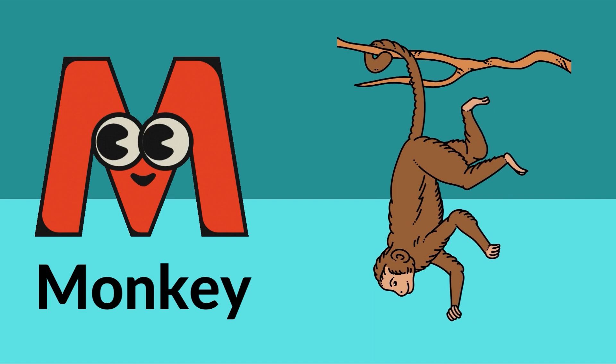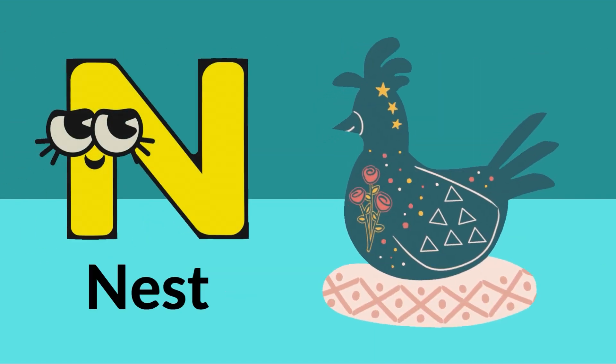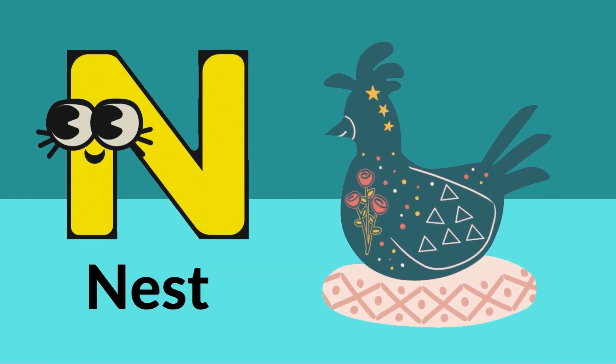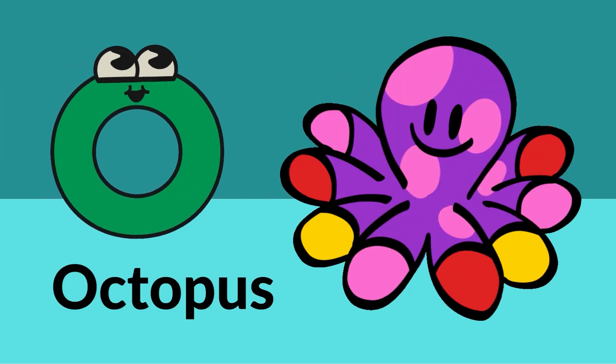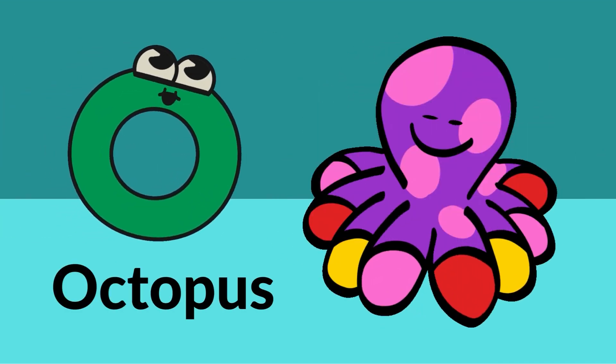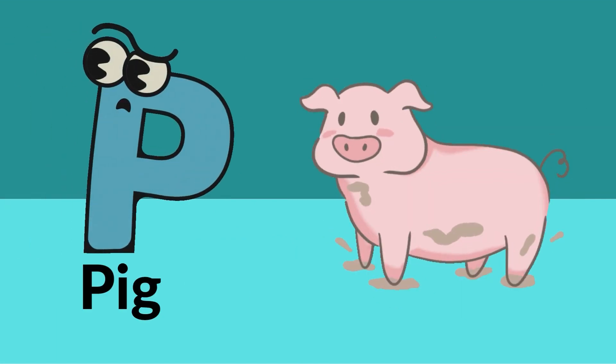N is for nest, O is for octopus, P is for pig.